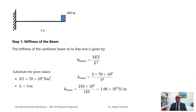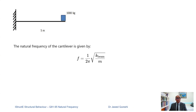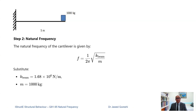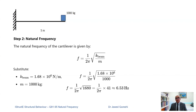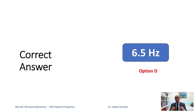For a cantilever beam, stiffness is 3EI over L³. EI and L are given, and when we plug in those values we get the stiffness as 1.68×10⁶ Newton per meter. Once we have that, we apply it in the formula for natural frequency: 1 over 2π times the square root of K over M. K is found above and M is given. When we put in these values, we get 6.53 hertz. The formula are given and it is straightforward to solve — all you have to do is plug in the values. The correct answer is option D: 6.5 hertz.